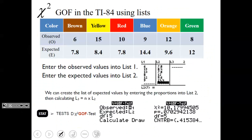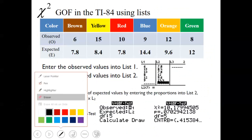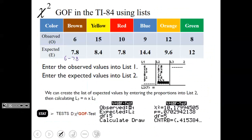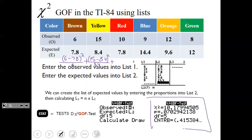The CNTRB output shows each individual component value — for example, (6 − 7.8)² ÷ 7.8 = 0.415. These are all the individual values you'd add up to get the chi-squared. While the results screen is loaded, you can arrow right to see each component value, which lets you list out what you added to get the chi-square in a written problem.